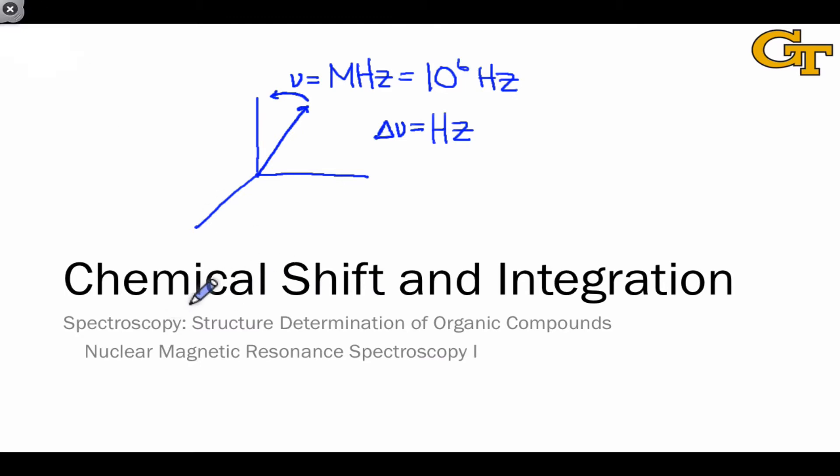For this reason, and because of the dependence of precession frequency on the magnetic field, we don't generally talk about frequency directly in NMR spectra. Instead, we use chemical shift, which lacks dependence on the applied magnetic field and makes the numbers more human-friendly. We'll also address integration, a tool to determine the number of protons associated with a signal.